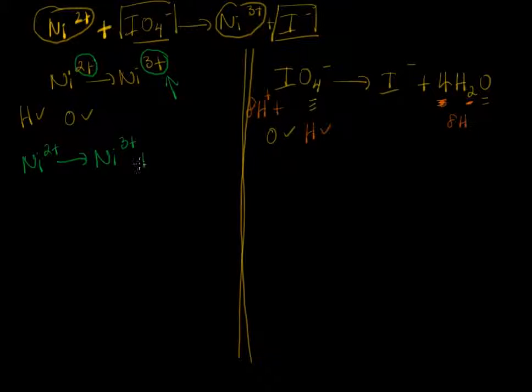Adding one electron to the right hand side, so we're done with the charge. Now over here it's a little bit more tricky. 8H pluses is 8 times positive 1 or plus 8. IO4 minus has a negative 1 charge. So 8 minus 1 is plus 7 charge on the left. Here we have a minus 1 charge due to 1 I minus and waters are zero charge neutral, so 4 times 0 is 0, so the total charge here is minus 1.